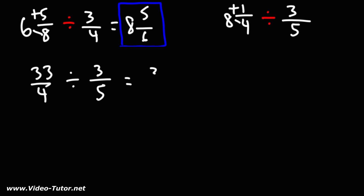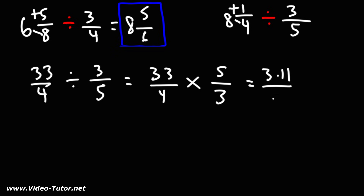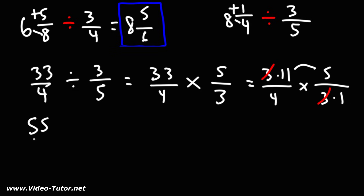Using keep-change-flip, we're going to keep the first fraction the same, change division to multiplication, and flip the second fraction. Now, we do have some common factors here. 33, we can write that as 3 times 11, and 3 as 3 times 1, so we could cancel a 3. Now let's multiply across: 11 times 5 is 55, and 4 times 1 is 4.